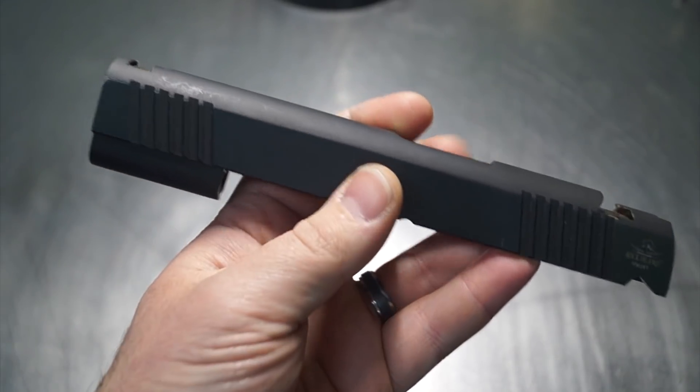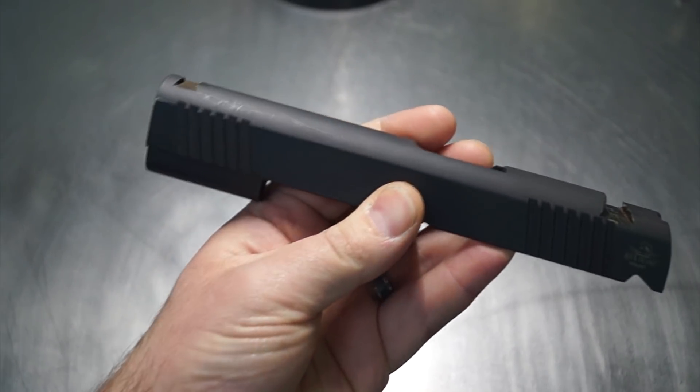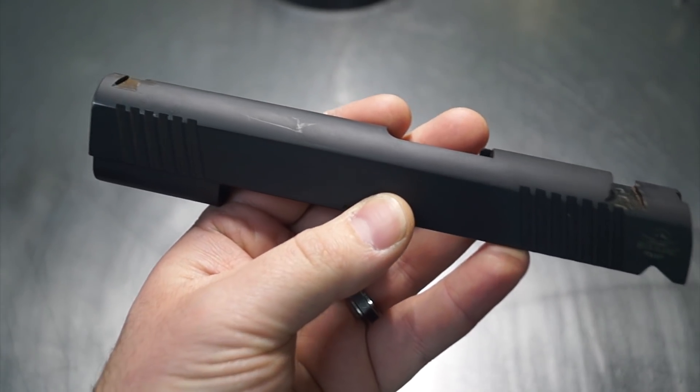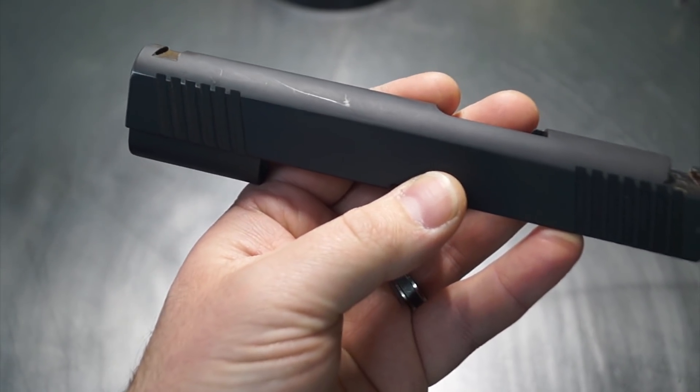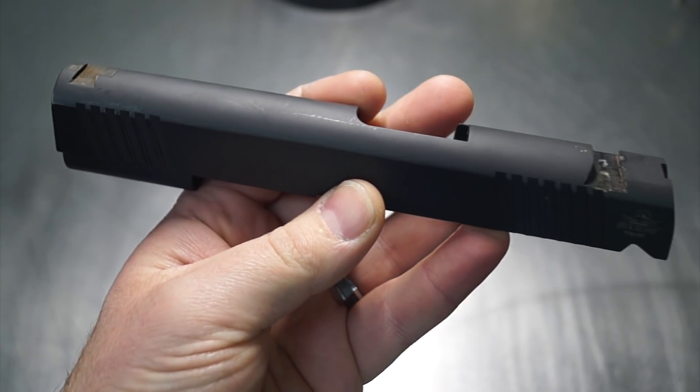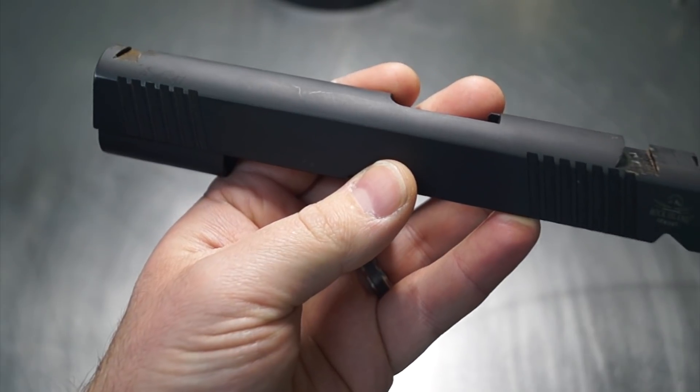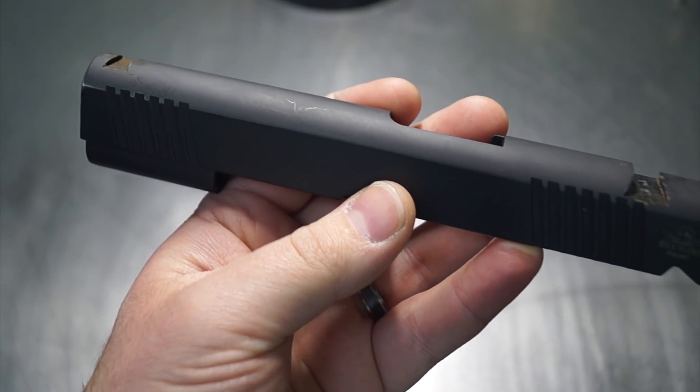We are going to be doing the Raptor cuts on this. Now the deal behind Raptor cuts is that every person that cuts them, or I should say companies that cut them, do them different. They use a different ball nose, a different step over, a different angle, and they all come out looking a little bit different. They're not all exact clones of each other. They have to be drawn and they have to be matched up to exactly what you're doing.